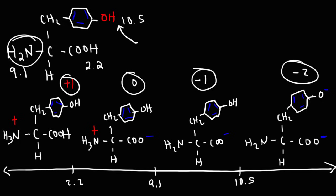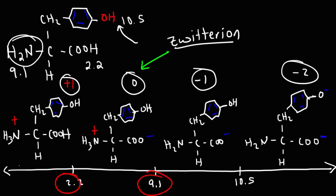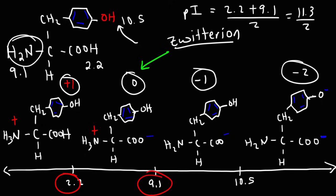The net charge always decreases by 1 from left to right. The zwitterion has a net charge of 0, so it's the second structure. To calculate the isoelectric point, we average the two flanking pKa values: (2.2 + 9.1) / 2 = 11.3 / 2, which is approximately 5.65. So 5.65 is the isoelectric point of tyrosine. Now you know how to calculate the isoelectric point of zwitterions for amino acids.